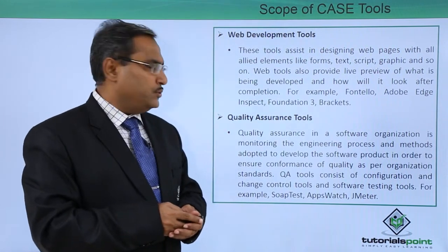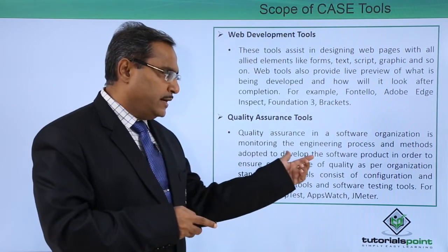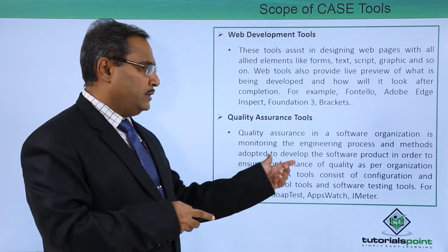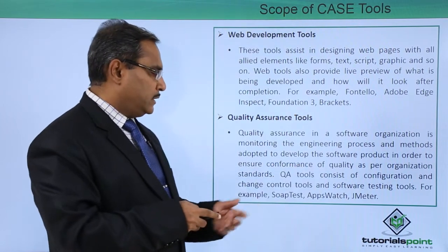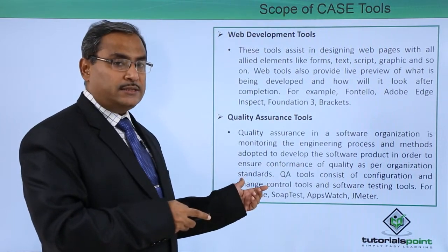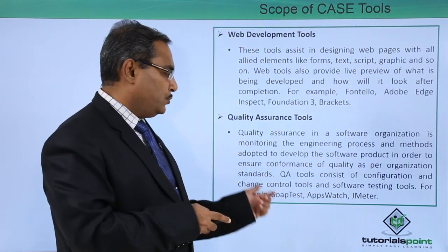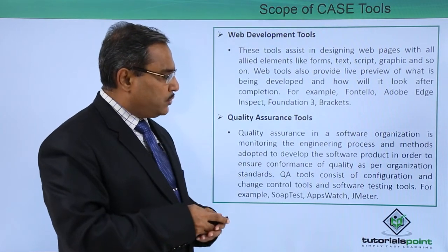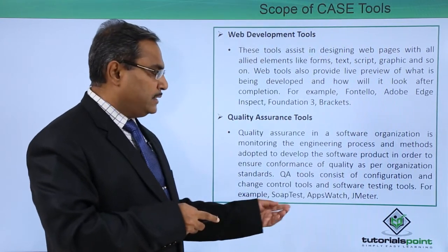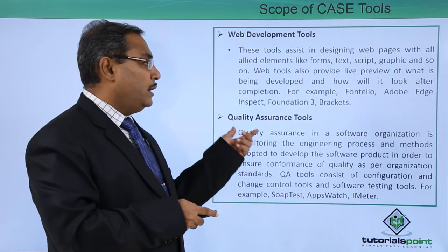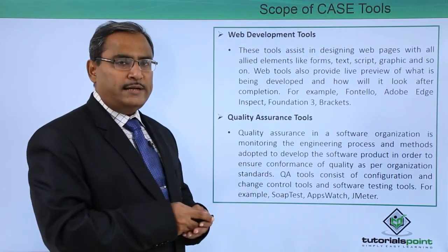Next, let us go for the quality assurance tools. Quality assurance in a software organization is monitoring the engineering process and methods adopted to develop the software product in order to ensure conformance of quality as per the organizational standards. Quality assurance tools consist of configuration, change control tools, and software testing tools. JMeter is one of the very famous quality assurance tools.